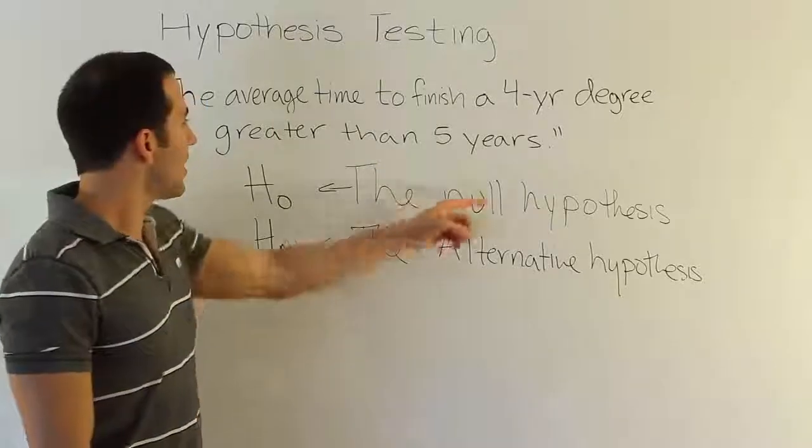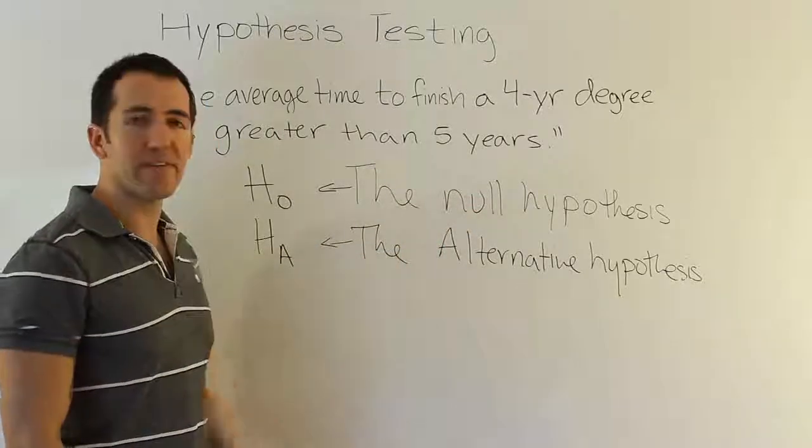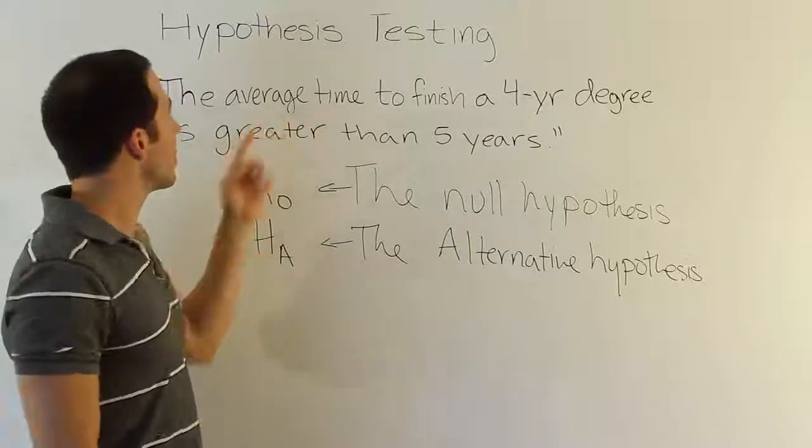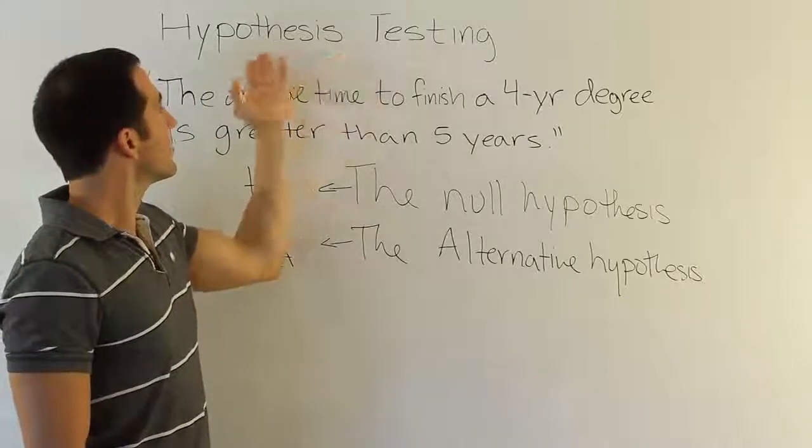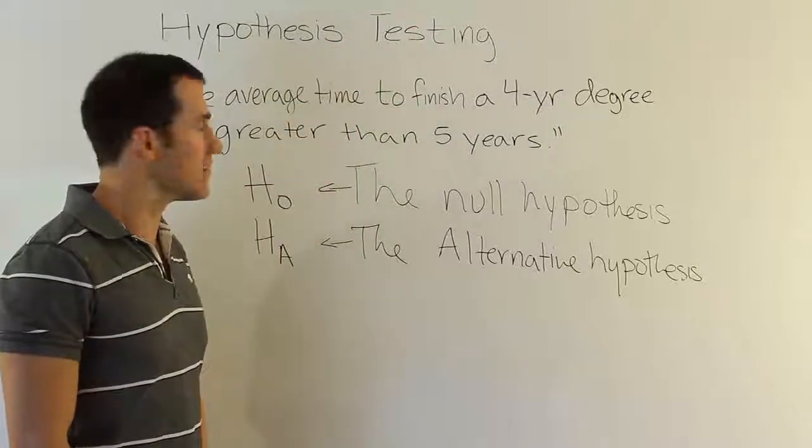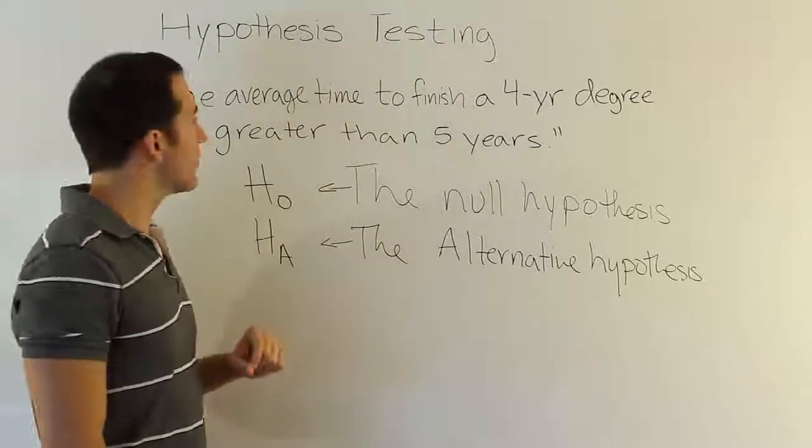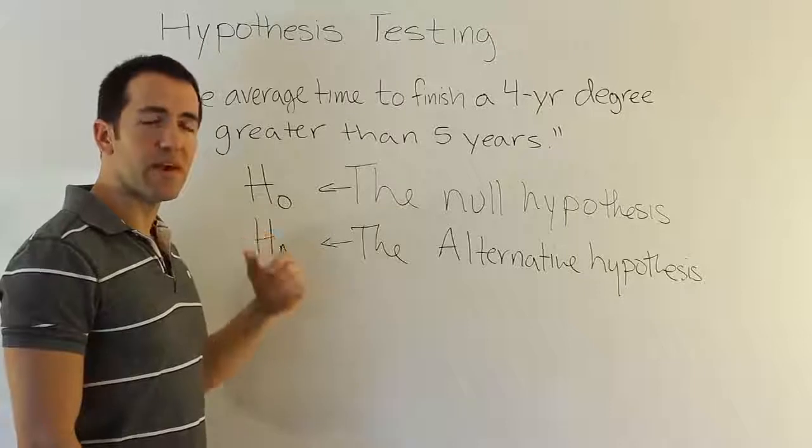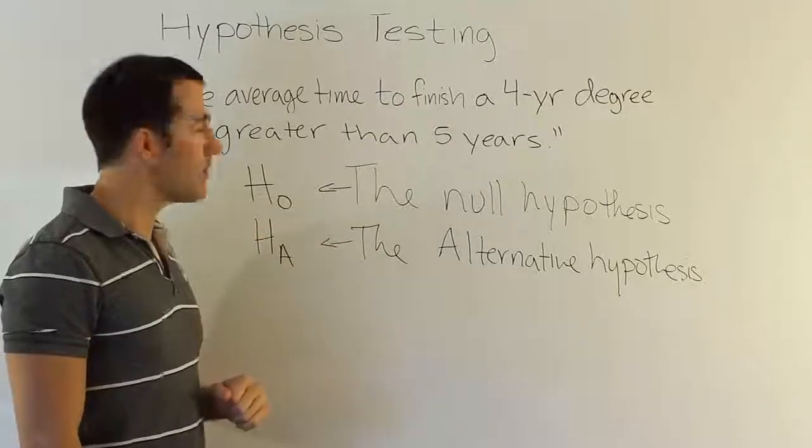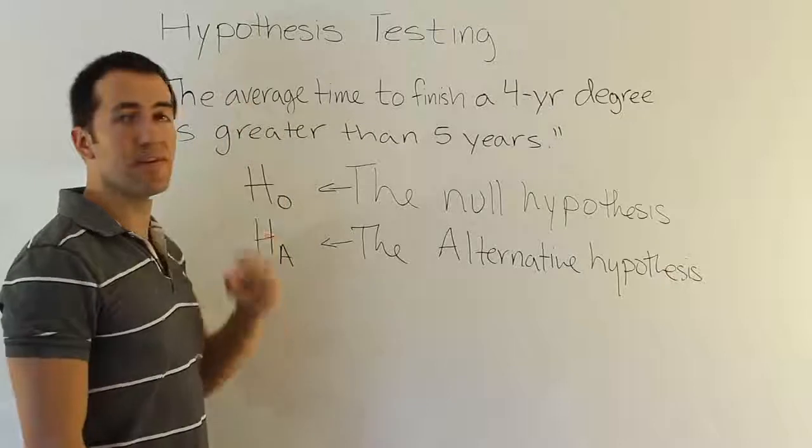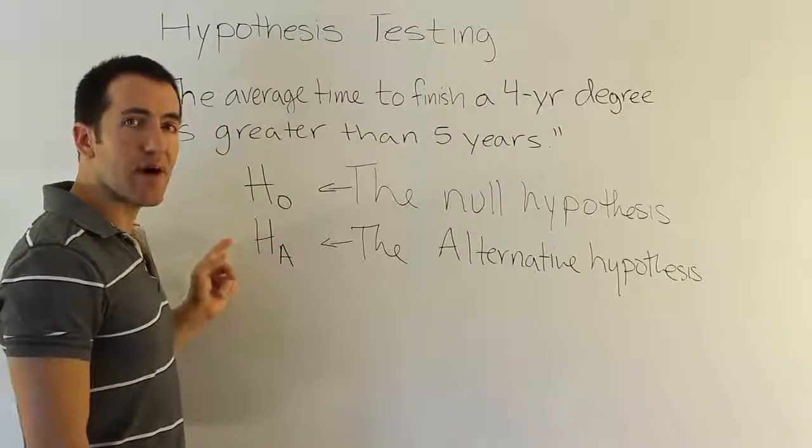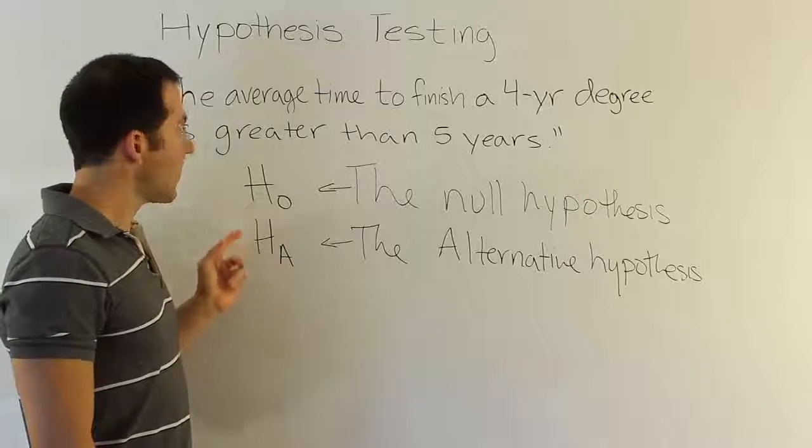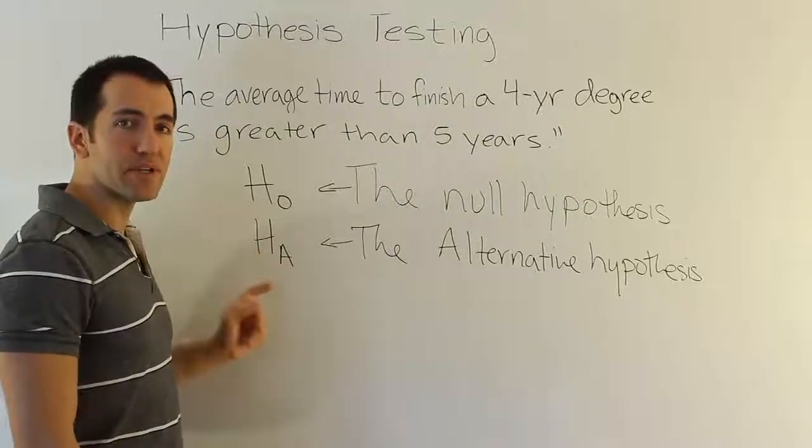This video is about the null hypothesis and the alternative hypothesis. We're continuing from the problem we worked on in the last video, discussing the properties of hypothesis testing one by one. The first step in the previous video was expressing the claim symbolically. Our second step in the process of testing hypotheses is going to be to work with these two competing hypotheses, which are in direct opposition of one another.